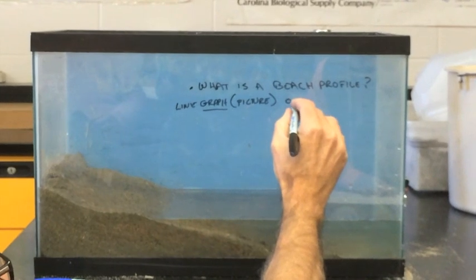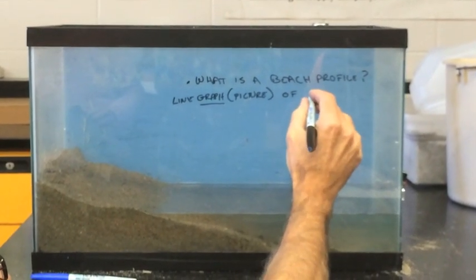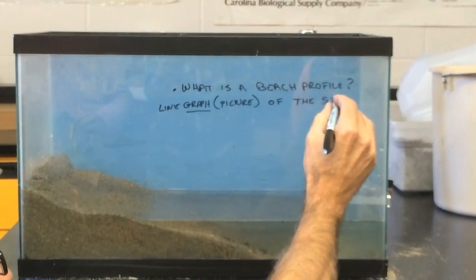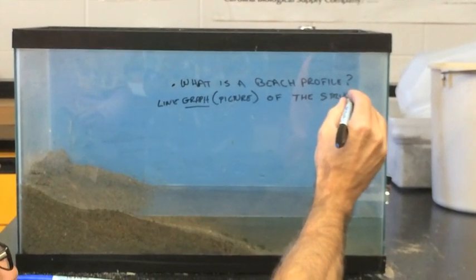A line graph or picture of the structure or shape of the beach.